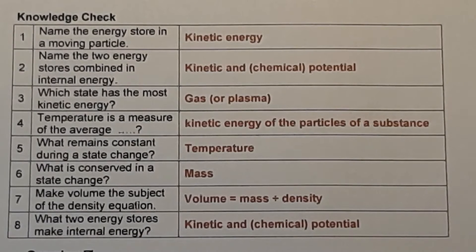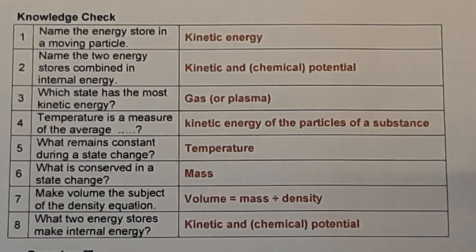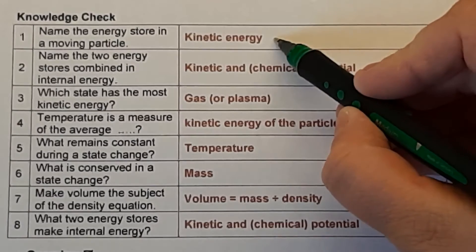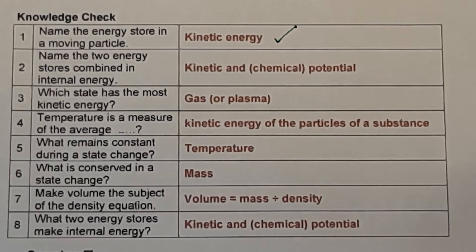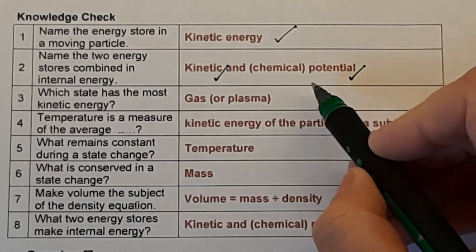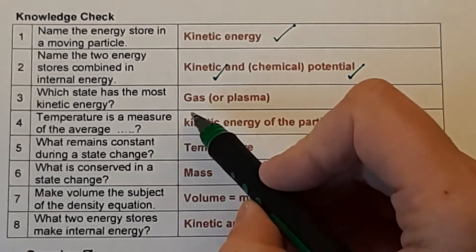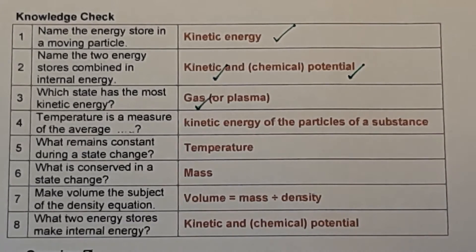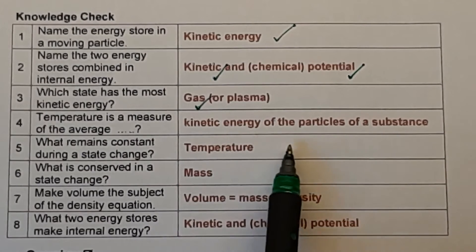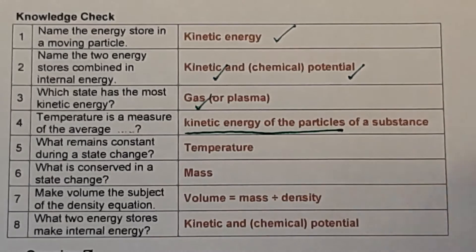Let's go through those questions. Make sure you're marking in a pen of a different colour. Question one: name the energy store of a moving particle — that's kinetic energy. Question two: name the two energy stores combined in internal energy — that's kinetic and chemical potential energy. Question three: which state has the most kinetic energy? That's gas. Question four: temperature is a measure of the average kinetic energy of the particles of the substance.